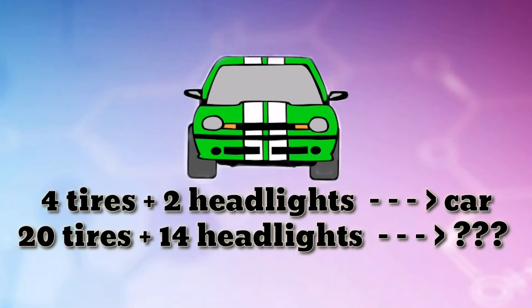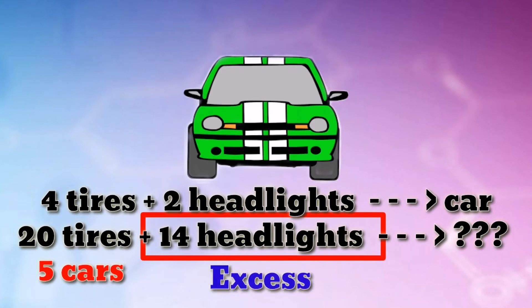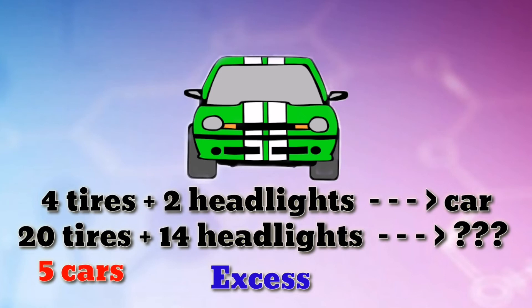With 20 tires, five cars can be produced because there are four tires to a car. With 14 headlights, seven cars can be built — each car needs two headlights. Although more cars can be made from the headlights available, only five full cars are possible because of the limited number of tires available. In this case, the headlights are in excess, because the number of cars formed by 20 tires is less than the number of cars produced by 14 headlights.